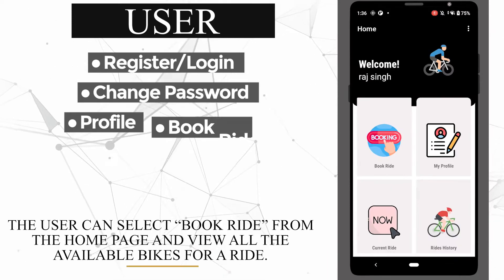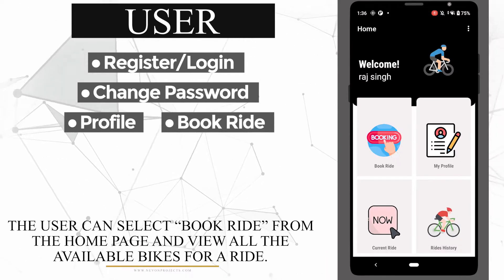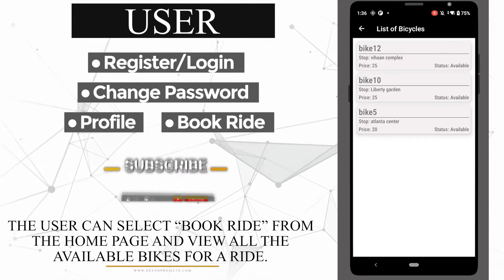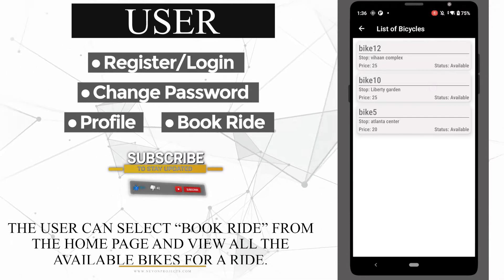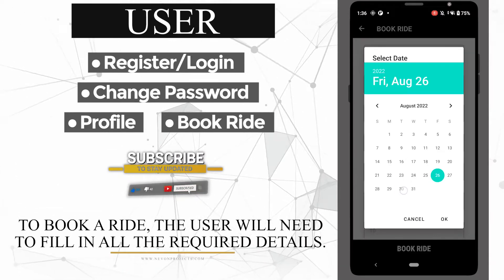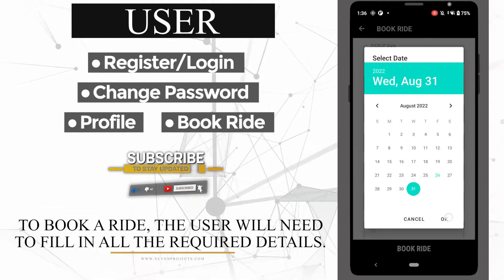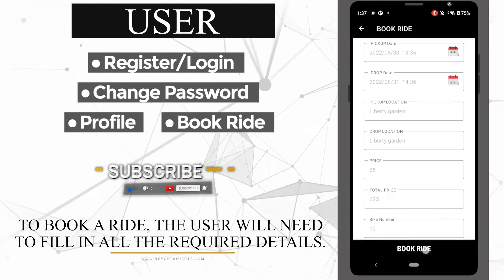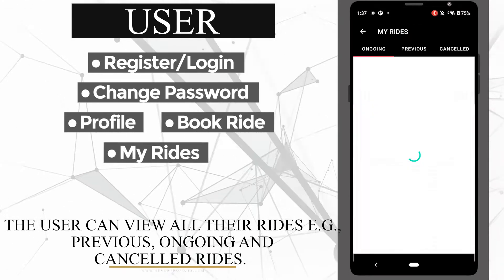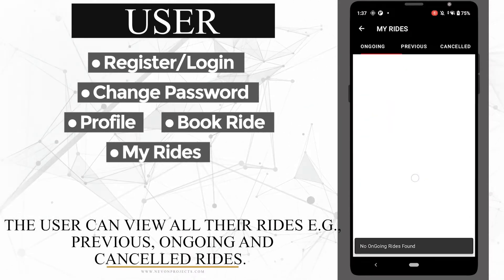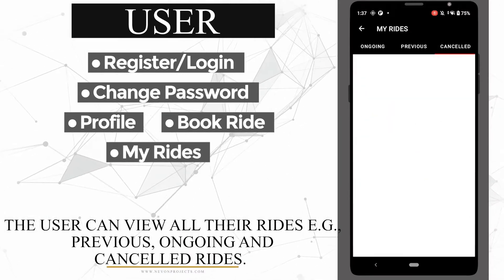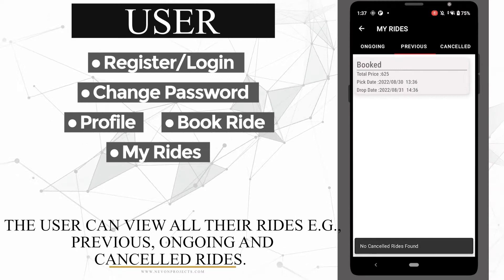The user can select 'Book Ride' from the home page and view all available bikes for a ride. To book a ride, the user will need to fill in all the required details. The user can view all their rides, such as previous, ongoing, and cancelled rides.